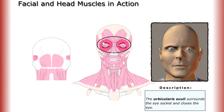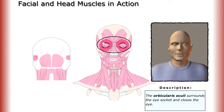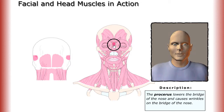The orbicularis oculi surrounds the eye socket and closes the eye. The procerus lowers the bridge of the nose and causes wrinkles on the bridge of the nose.